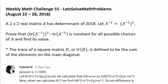A 2x2 real matrix A has a determinant of 2018. Let A to the negative second power be A inverse squared. Prove that trace of A inverse squared minus trace of A to the negative second power is constant for all possible choices of A, and find its value.